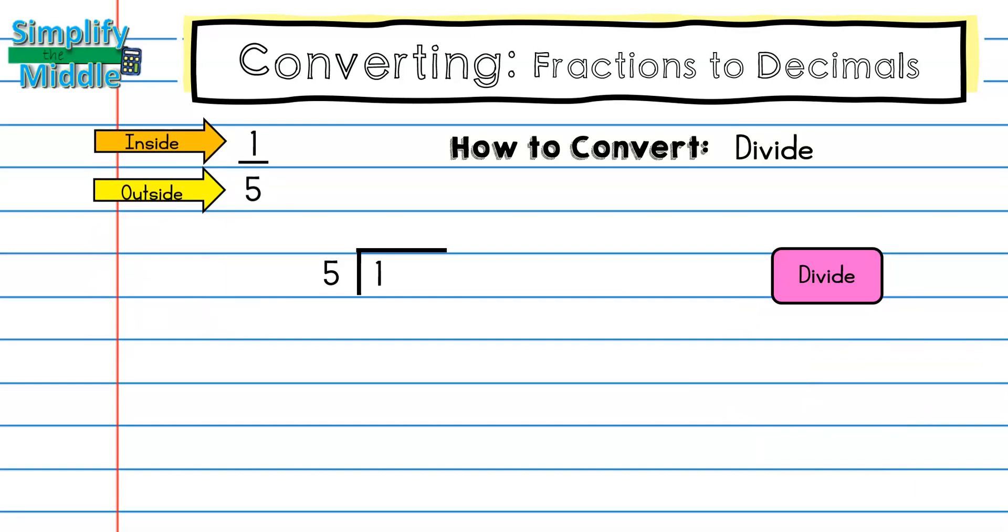When we're dividing one by five, we're asking how many groups of five are in one? Well, we know there aren't any, so that's our first step.